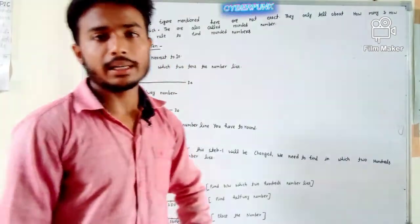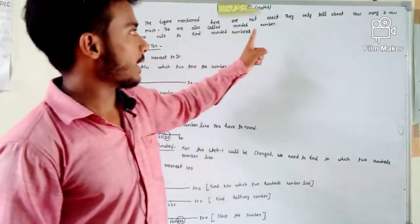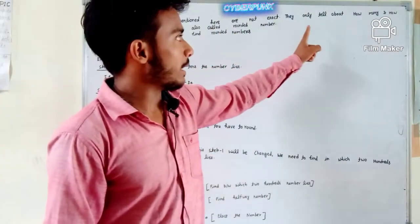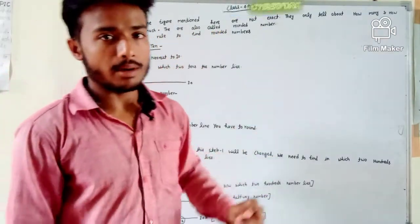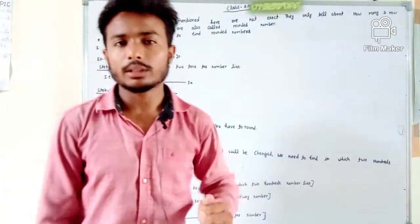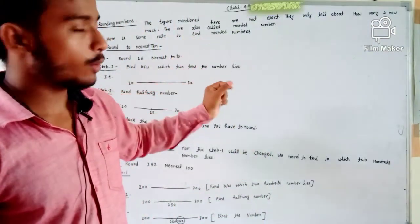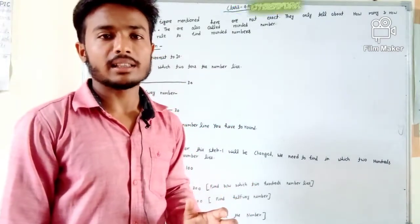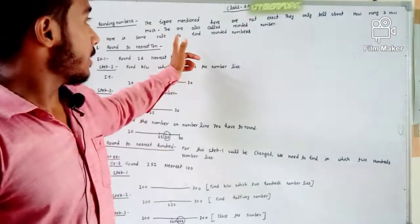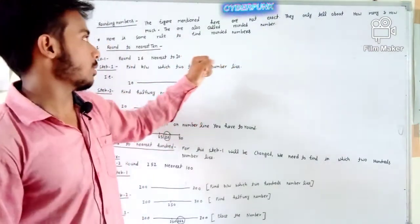You should know that these are not exact. They only tell about how many and how much. They are also called Rounding Numbers. Rounding Numbers are those which are not exact figures but tell us approximately how much. These numbers are called Round Numbers or Rounding Numbers.